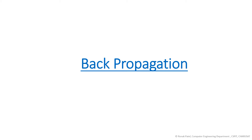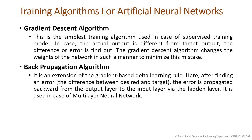Hello everyone, I am Ronak Patel. In this video we will see the intuition behind the backpropagation algorithm. We studied the gradient descent algorithm, which is the simplest training algorithm used in supervised training. When the actual output is different from the target output, the error is found and the gradient descent algorithm changes the weights of the network to minimize the mistake by finding the gradient — the slope at a particular point — and then updating the weight.